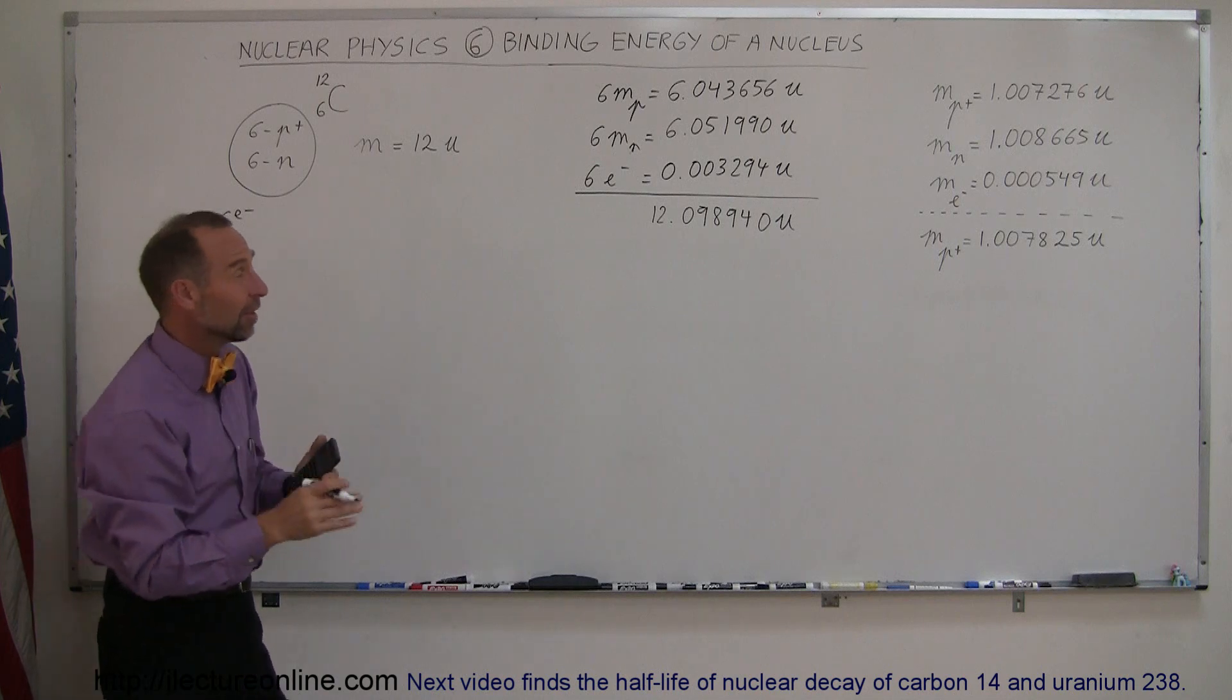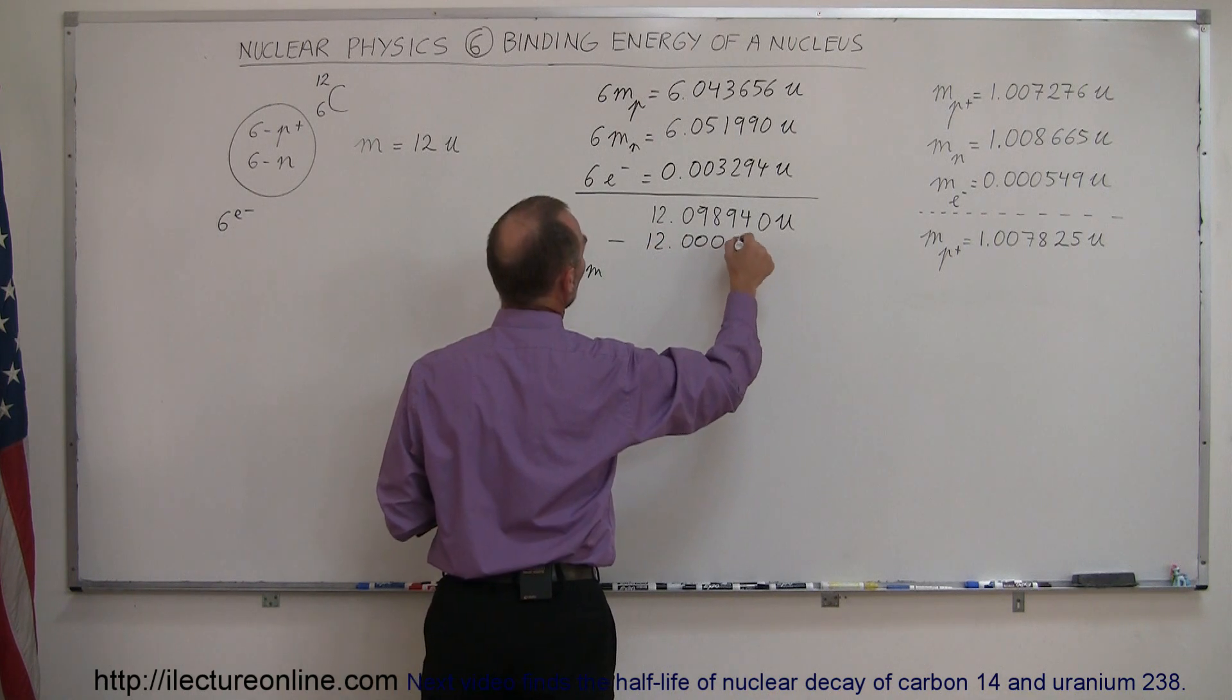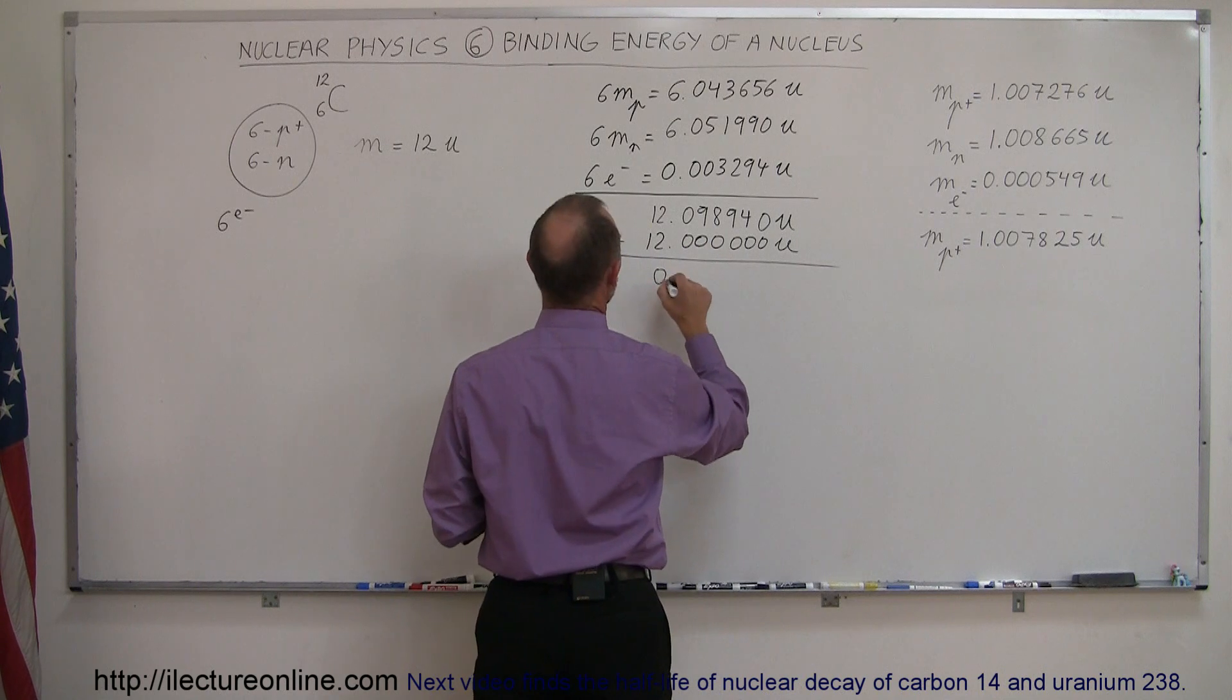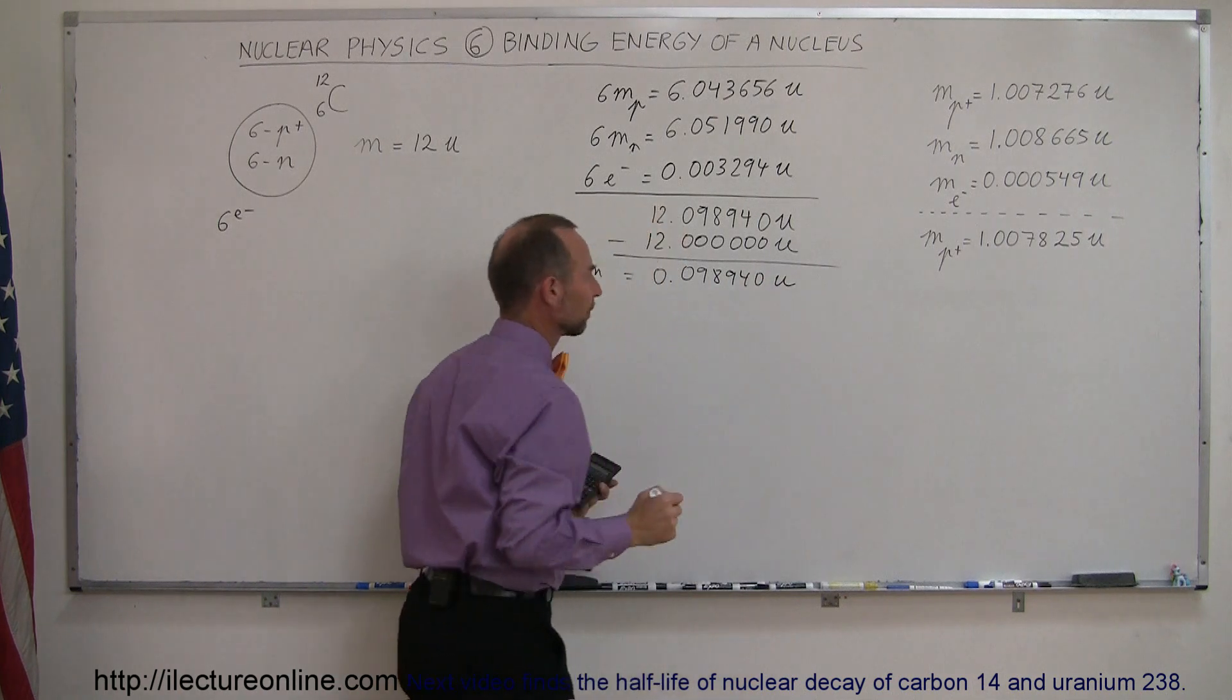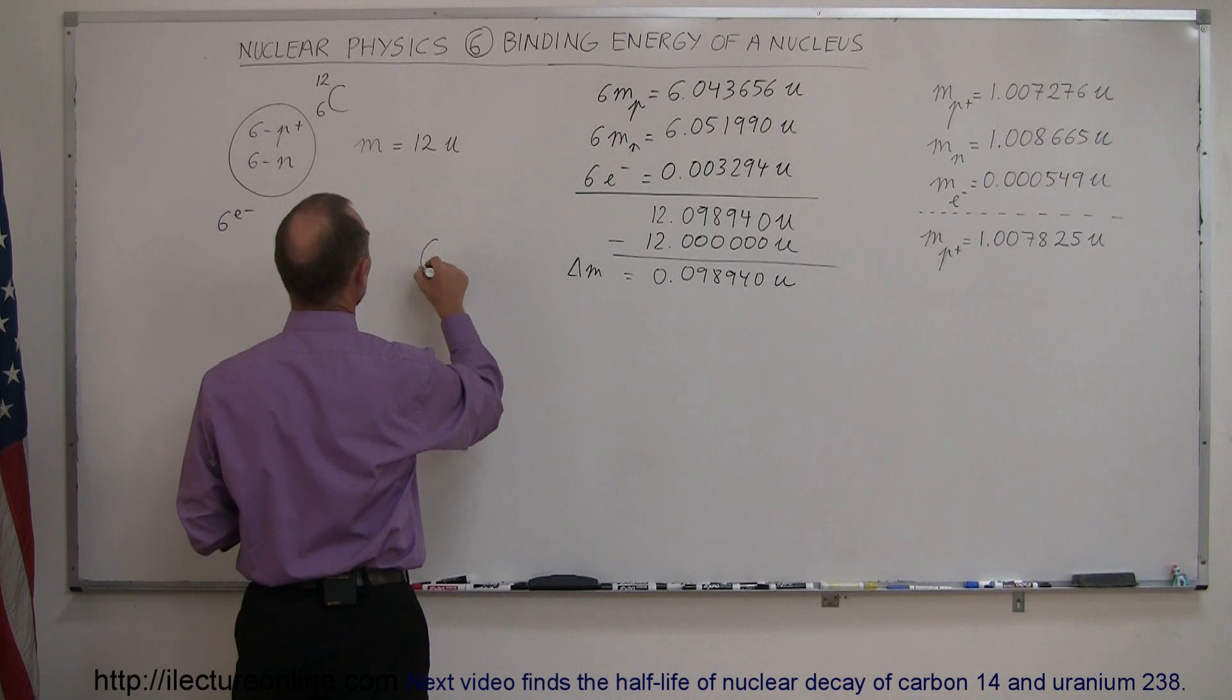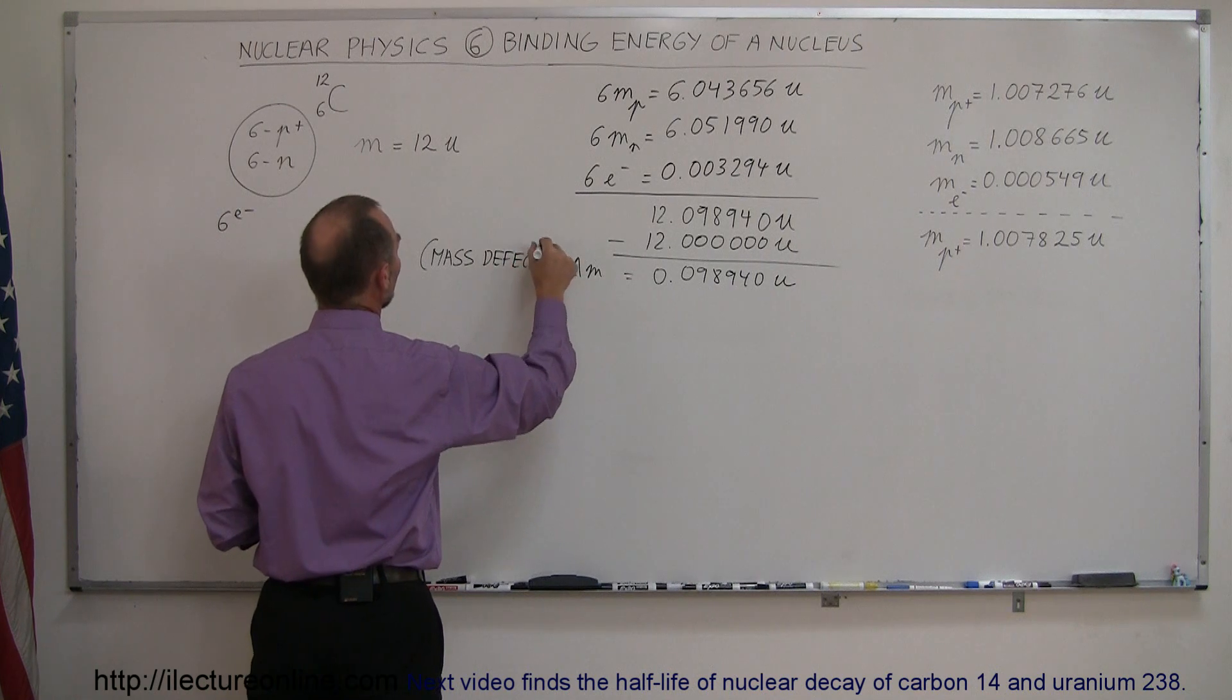So the difference in the mass, which is called the delta M, when we subtract 12.000000U, you get exactly 0.098940 atomic mass units. That's called the difference in the mass or the mass defect, the amount of mass that's lost when you put a nucleus together.